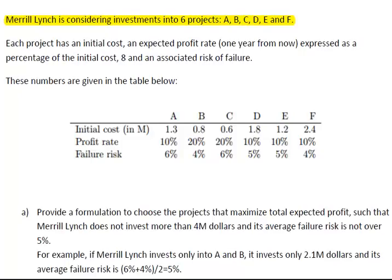This is a binary integer problem, a financial mathematics application of integer programming. Merrill Lynch is considering six projects: A, B, C, D, E, and F. Each project has an initial cost, the expected profit rate expressed as a percentage of the cost, and an associated risk of failure.